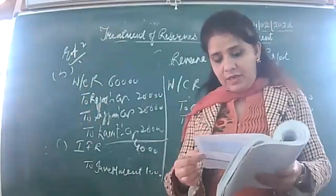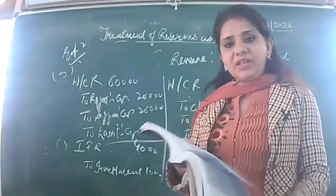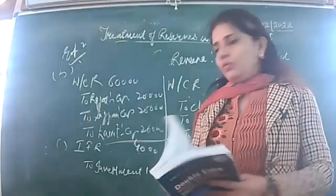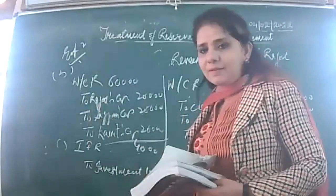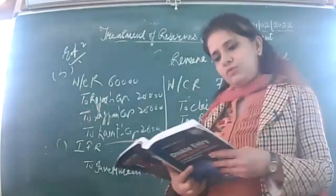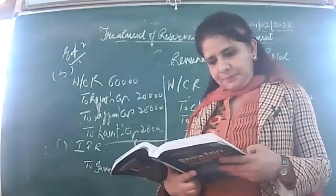The ratio is not given, so we will divide equally. 3,000 divided equally — 1,000 each to X's capital, to Y's capital, to Z's capital. This was the way IFR is treated.